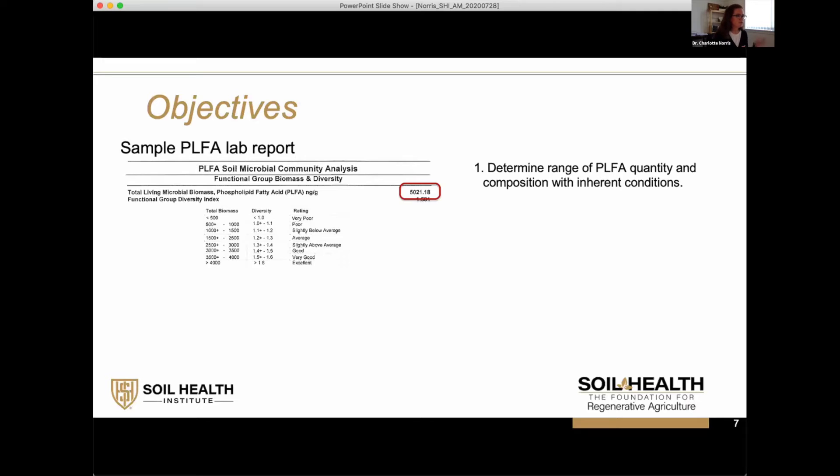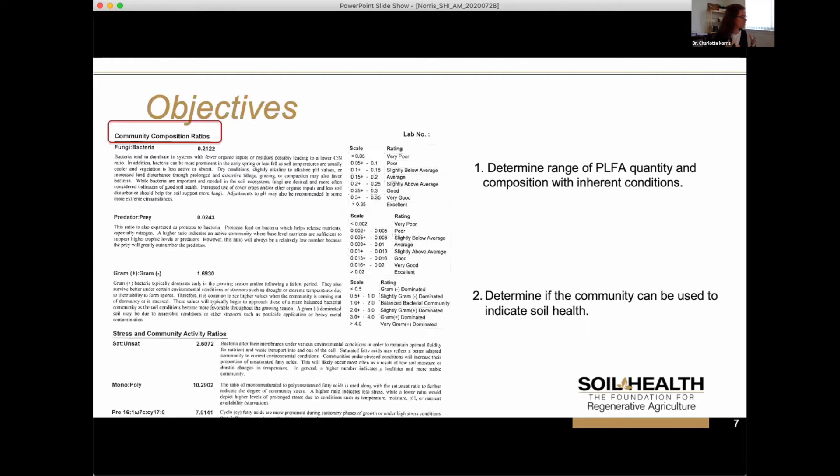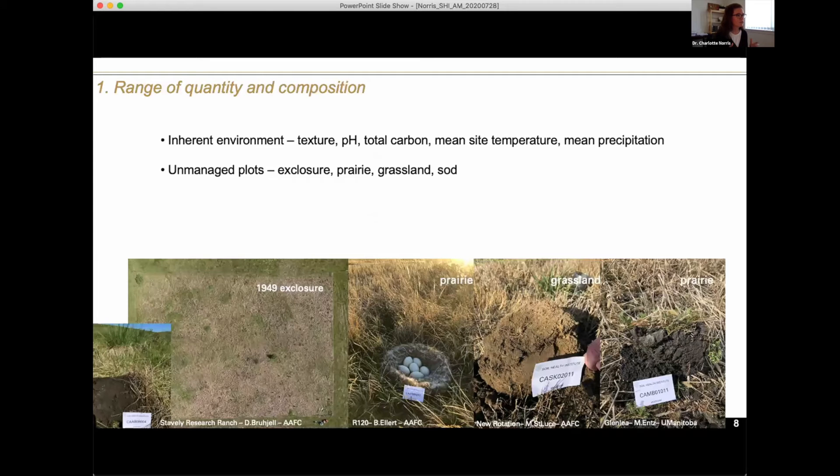I pulled off an example lab report here. They'll often give you a total. I want to talk about totals and also about composition and how it varies across different inherent conditions. Composition can be referred to as ratio in this report. We'll talk more about that, the challenges, and the direction I'm taking with this dataset.